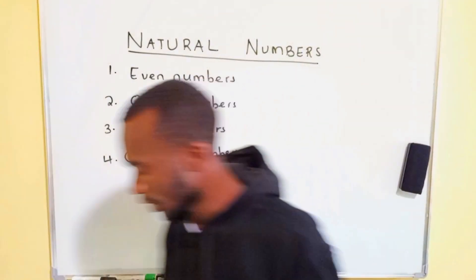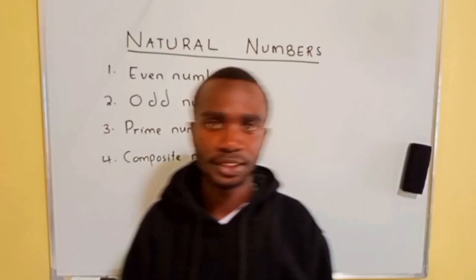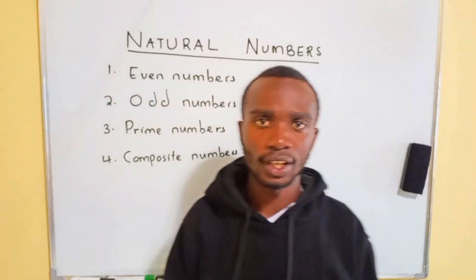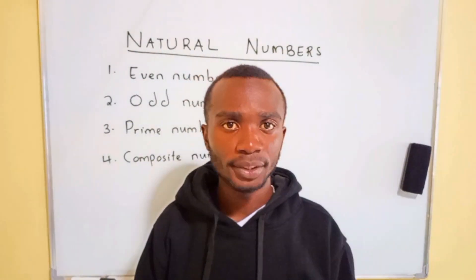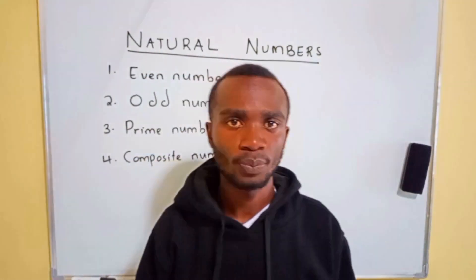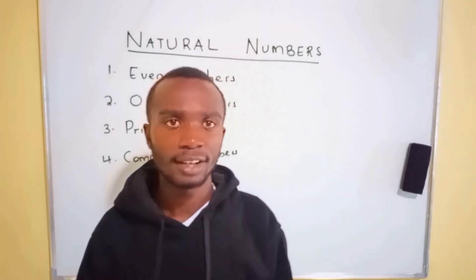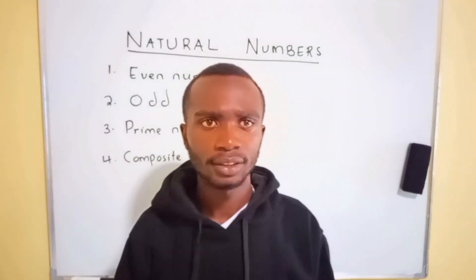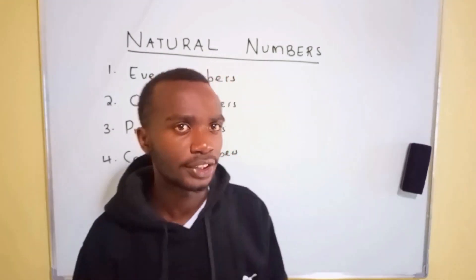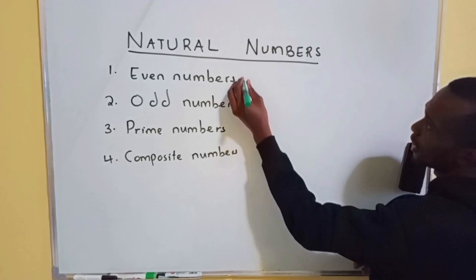Now the even numbers — the even numbers are just numbers that are divisible by two. The last digit of the even numbers can either be zero, two, four, six, or eight.